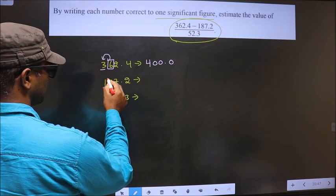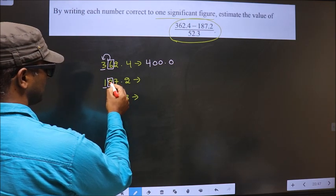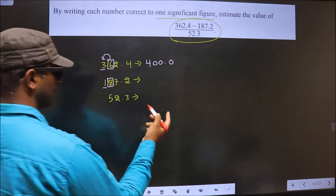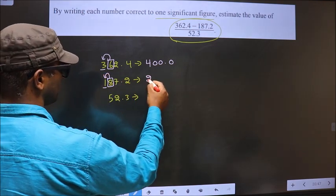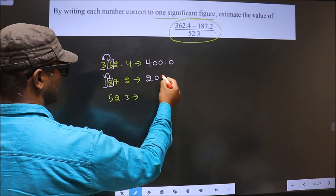Now here, this is first, this is second significant number which is 8, greater than 5. So we should add 1 to this, it will become 2. And 0 in rest of the places.